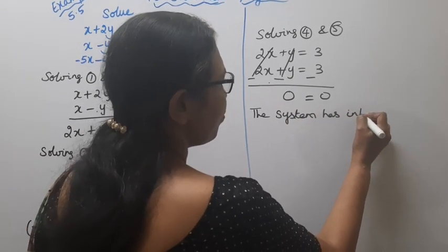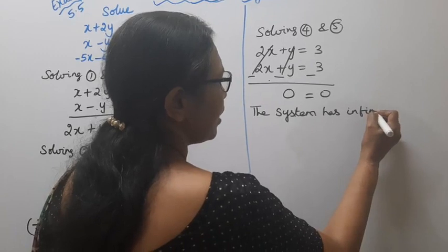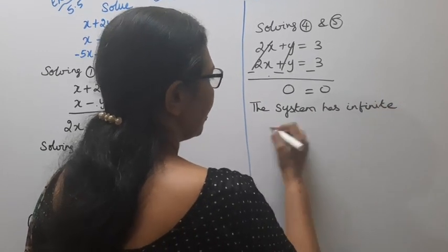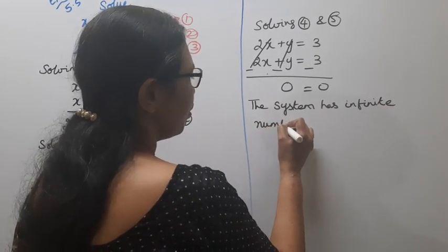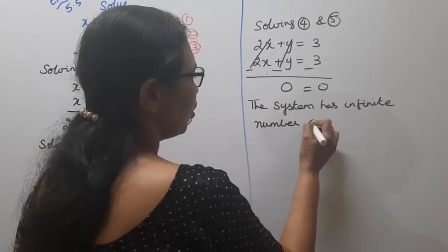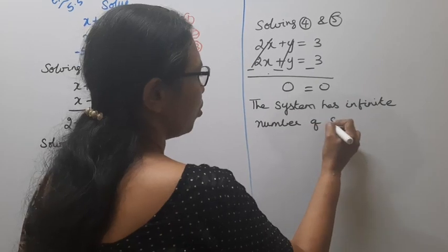Both equations are identical, so subtracting gives 0 equals 0. Therefore the system has an infinite number of solutions.